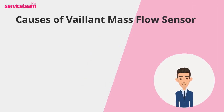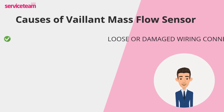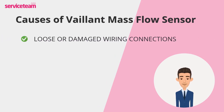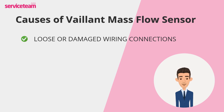Let's see what causes the Vaillant mass flow sensor error. The first cause is loose or damaged wiring connections. The mass flow sensor relies on precise electrical connections to communicate with the boiler's PCB. If plugs are loose, wires are damaged, or corrosion occurs, the sensor can fail to send the correct signals. This often triggers an F52 error code — a connection fault — causing the boiler to stop operating or behave erratically.